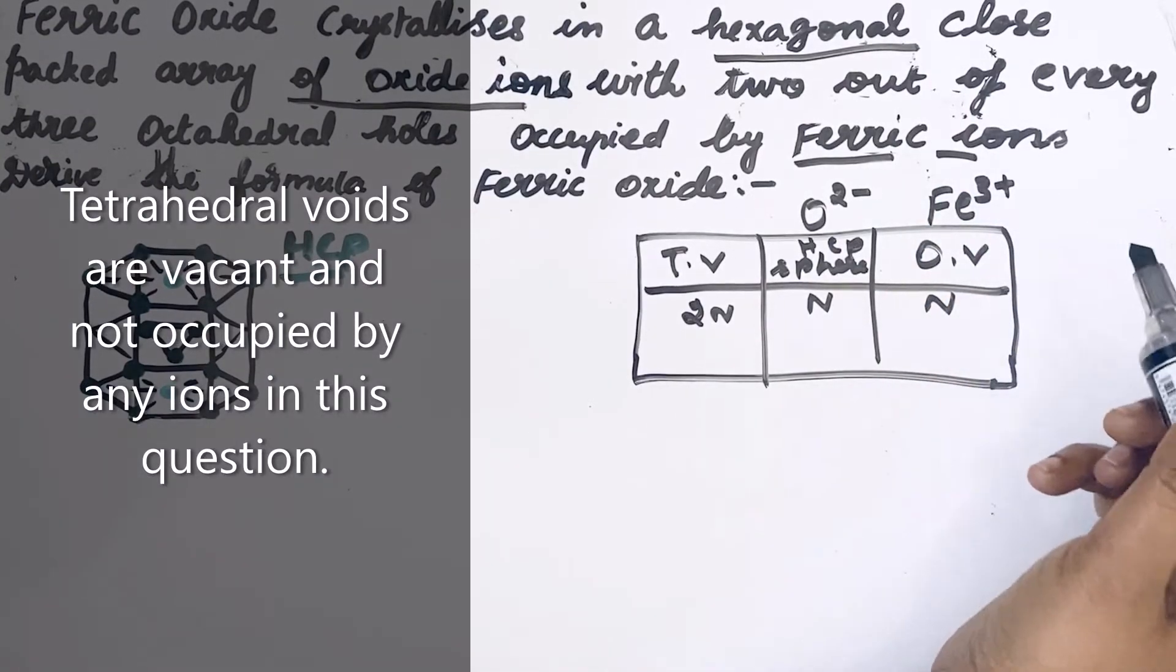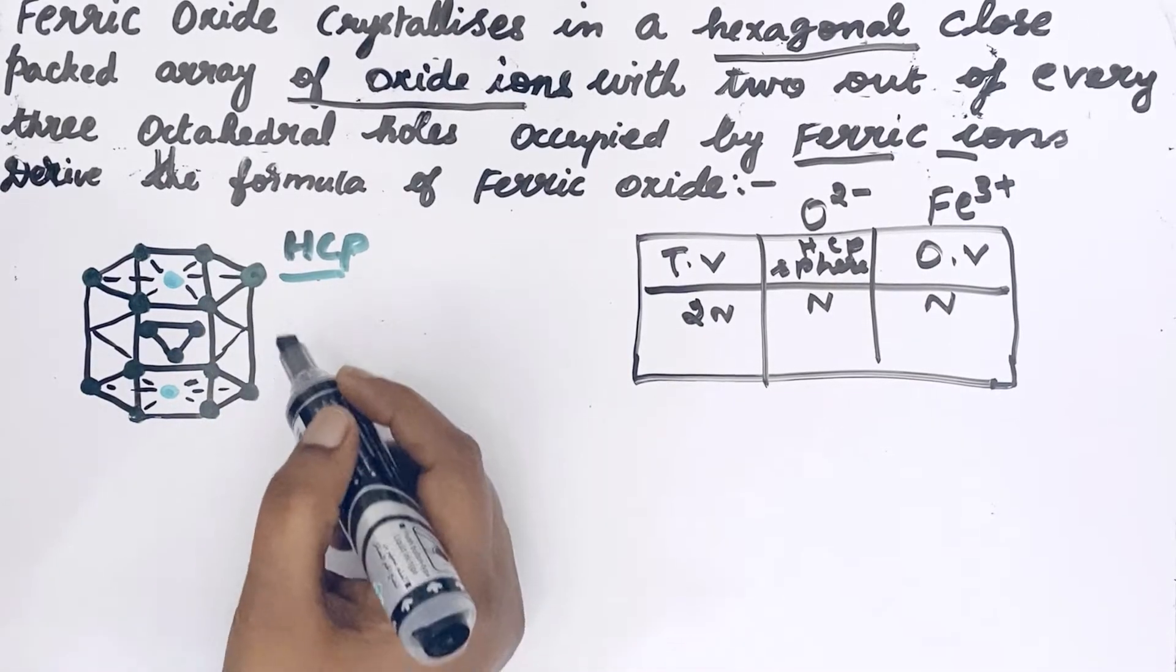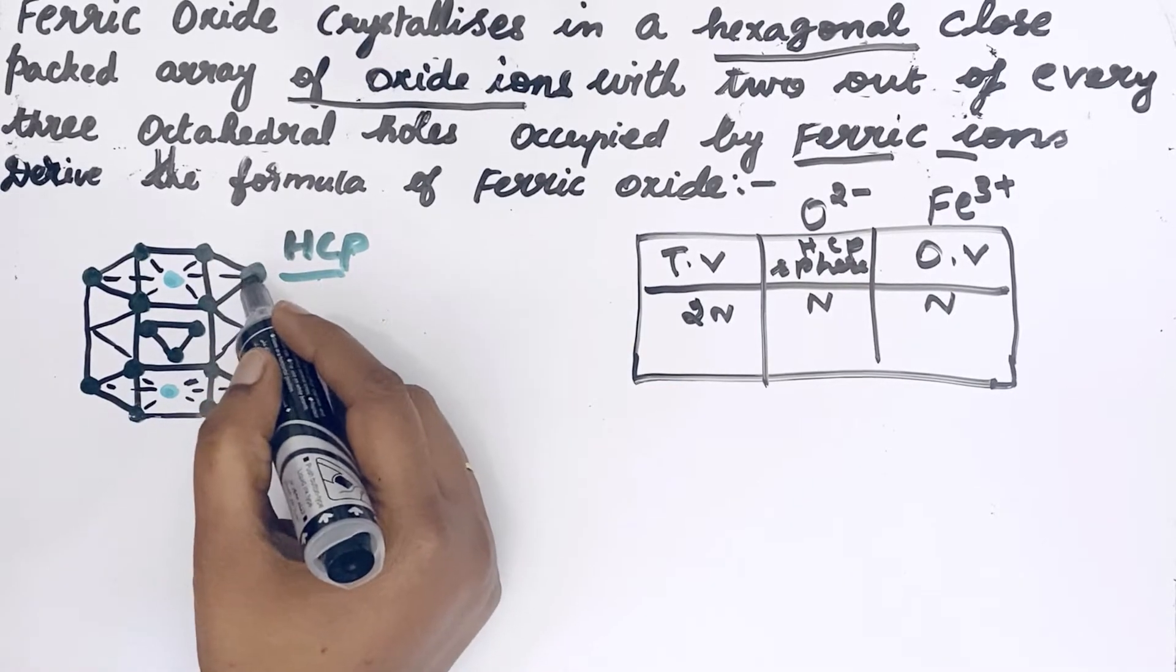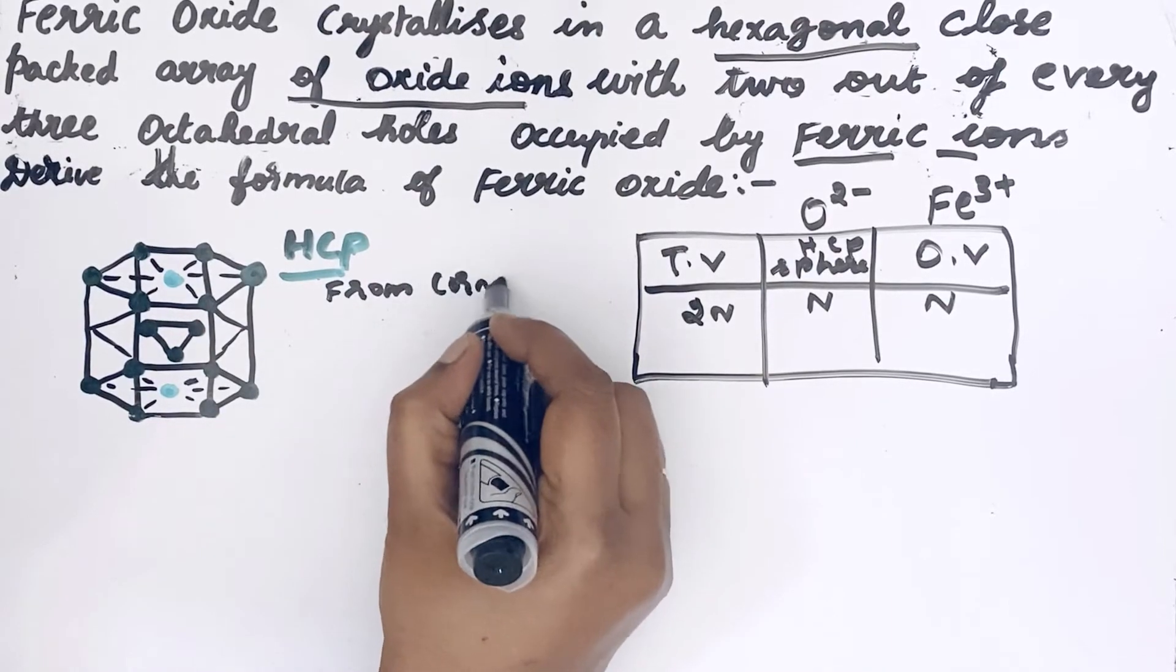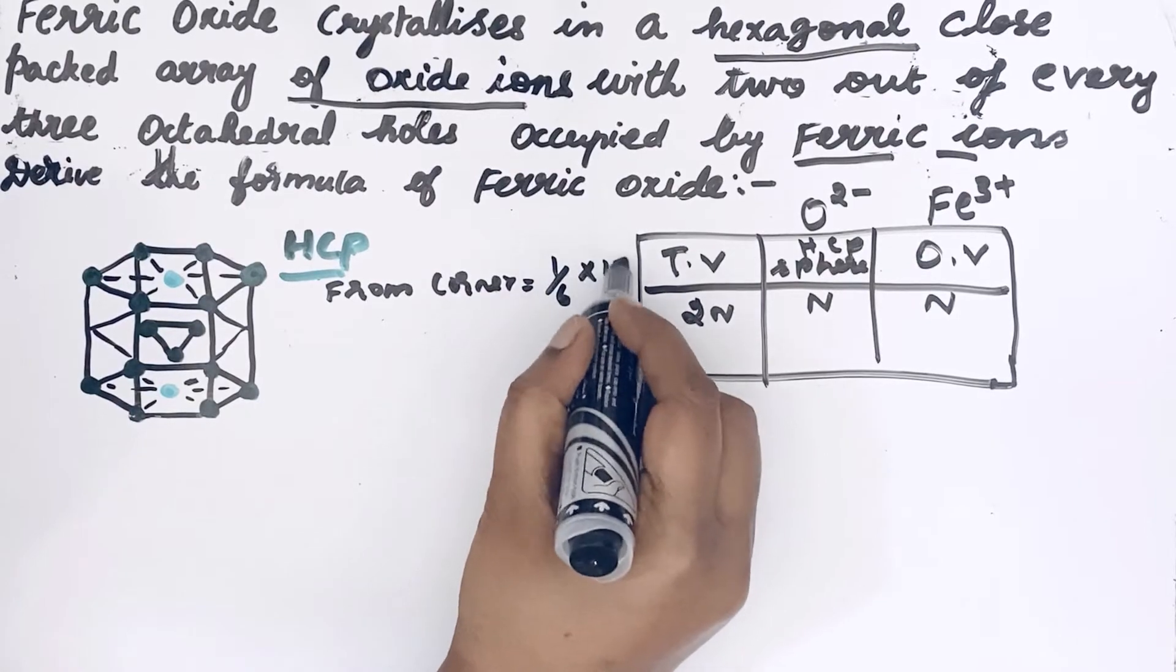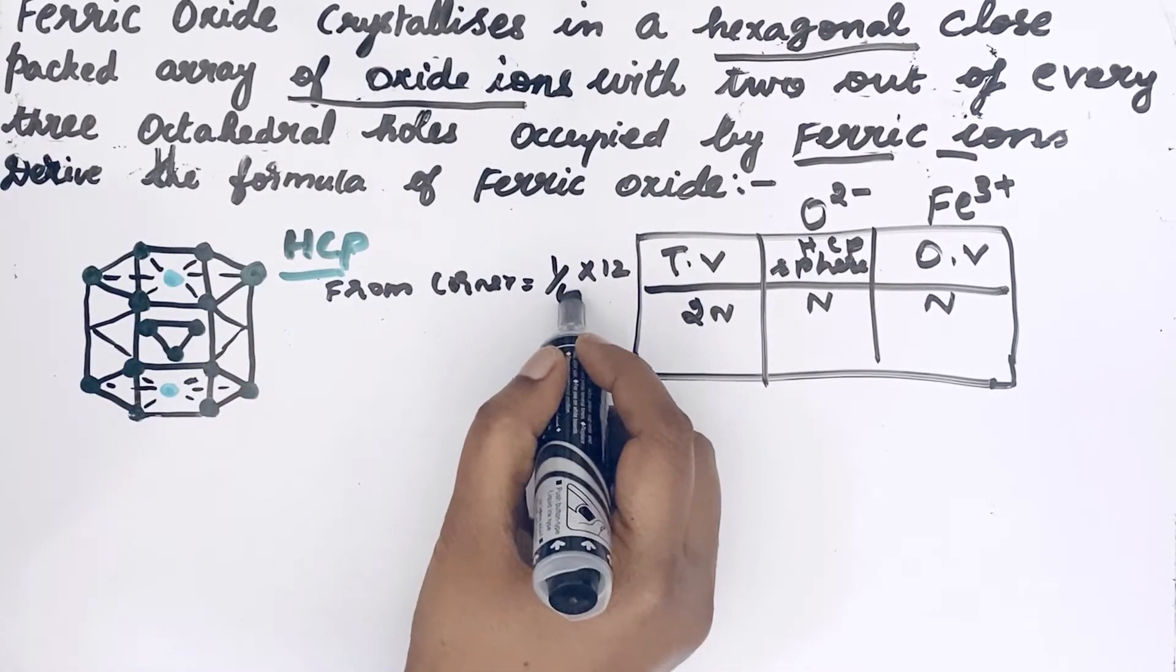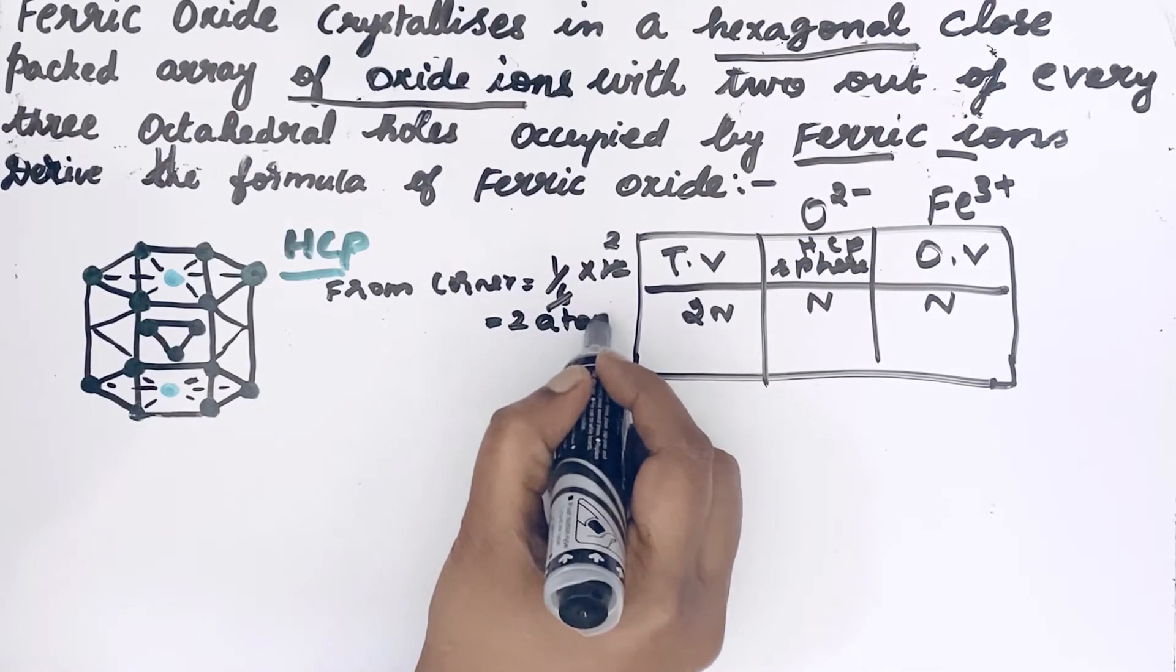To find n, see HCP structure here. Let us find the number of atoms in HCP. There are 12 corners in HCP, so from corners: 1/6 × 12. Why 1/6? Because the contribution of each atom in corner in HCP is only 1/6. So this gives 2 atoms from corners.